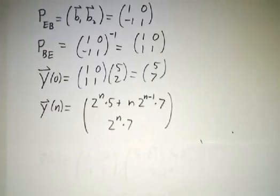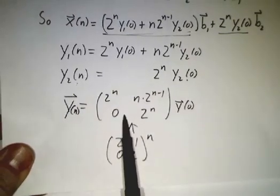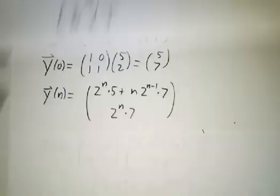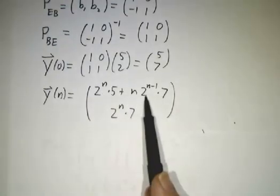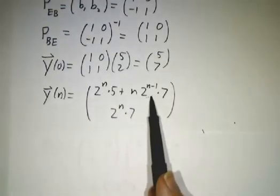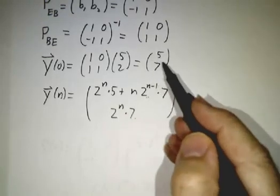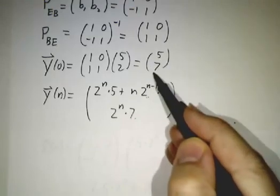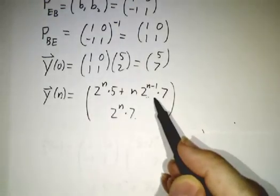To get y at time n, we use our formula. We multiply through and we get 5 times 2 to the n plus 7n times 2 to the n minus 1. And our second entry is just 7 times 2 to the n. The second entry just gets multiplied by 2 to the n. The first entry gets multiplied by 2 to the n and picks up a piece from the second entry.